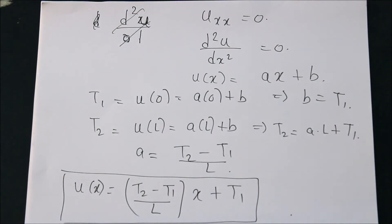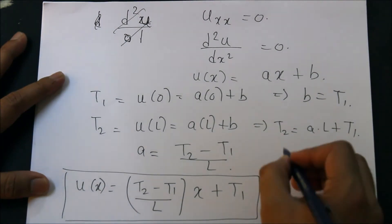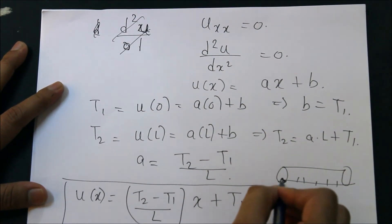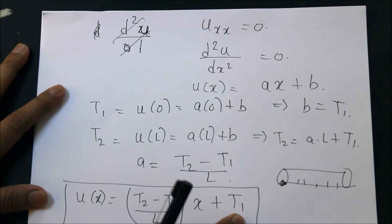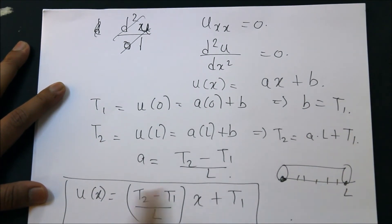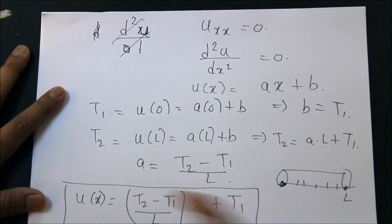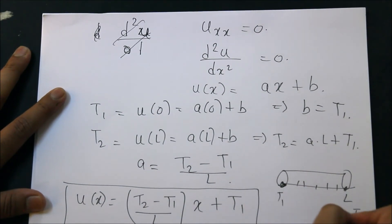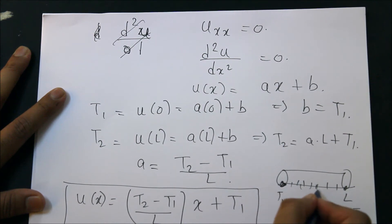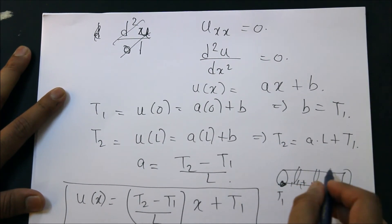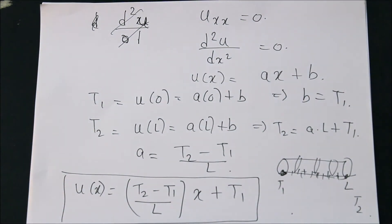As you keep changing your X—as you keep your position changing on the rod—if I'm at zero, when X is zero, I get T1. If my X is L, L cancels out, T1 cancels, leaving only T2. So I'm getting T1 and T2, which is correct. As you move away and take different X values, you get different temperatures. This is how your steady state solution looks like.